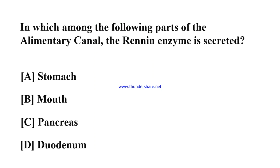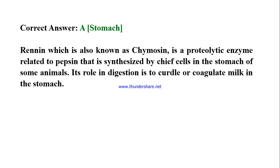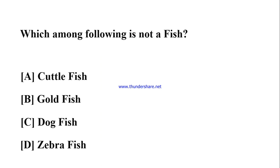In which among the following parts of the alimentary canal is the renin enzyme secreted? A) Stomach, B) Mouth, C) Pancreas, D) Duodenum. Correct answer: A) Stomach. Renin, also known as chymosin, is a proteolytic enzyme related to pepsin that is synthesized by chief cells in the stomach of some animals. Its role in digestion is to curdle or coagulate milk in the stomach.